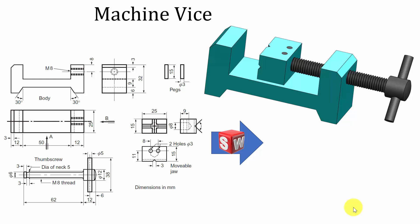Hello all, welcome to the SOLIDWORKS tutorials. In this video, I am going to show you how to model the machine vise in SOLIDWORKS. The machine vise has four parts: the body, the thumb screw, movable jaw, and the pegs. First, I am going to draw the parts separately. Finally, you are going to assemble it.